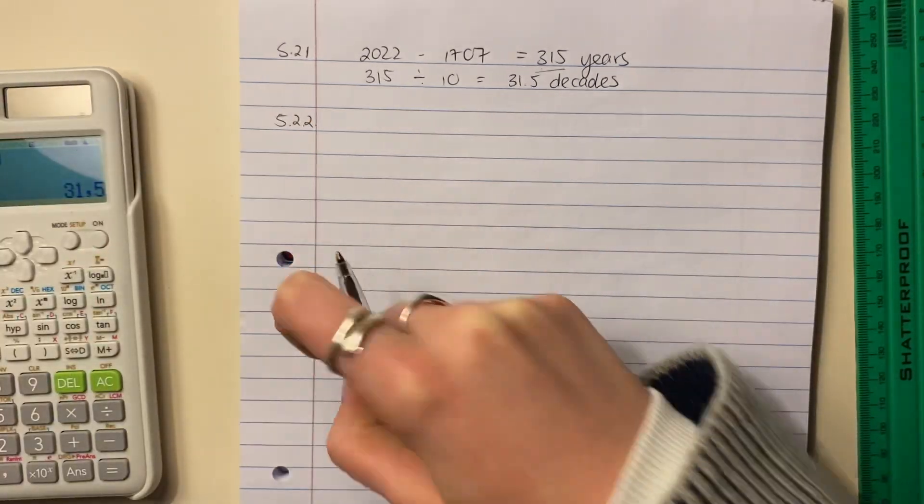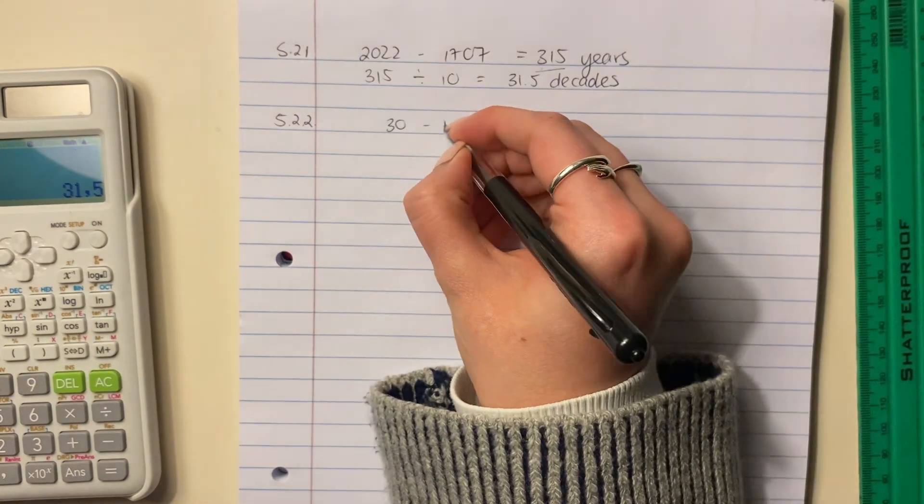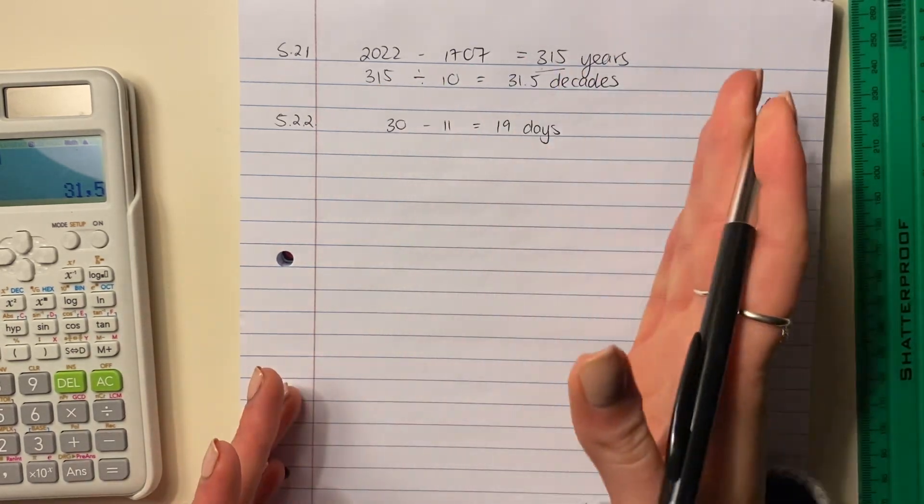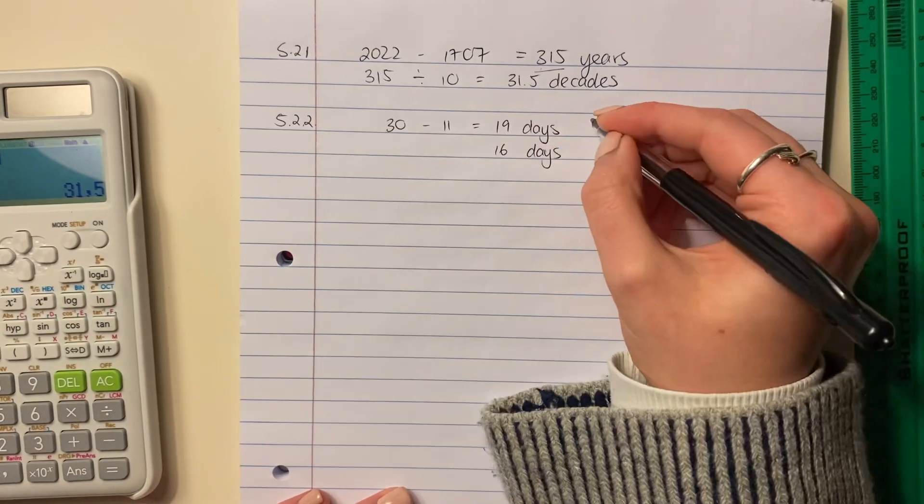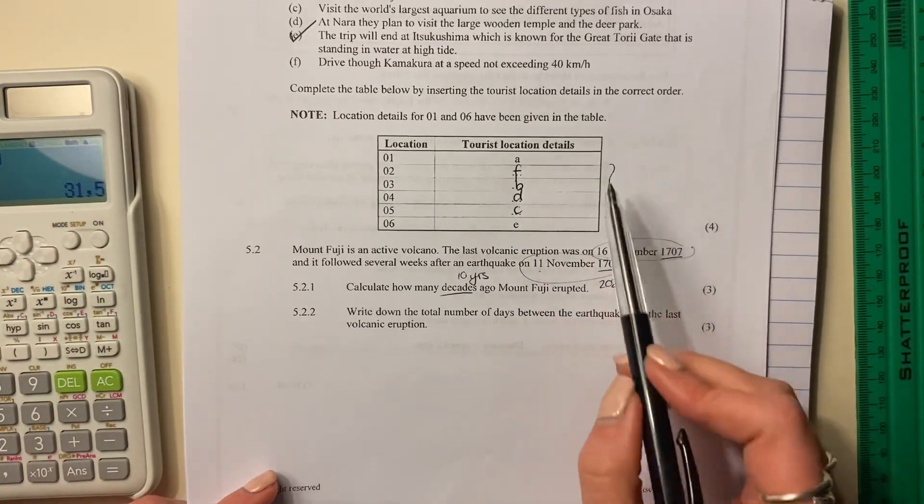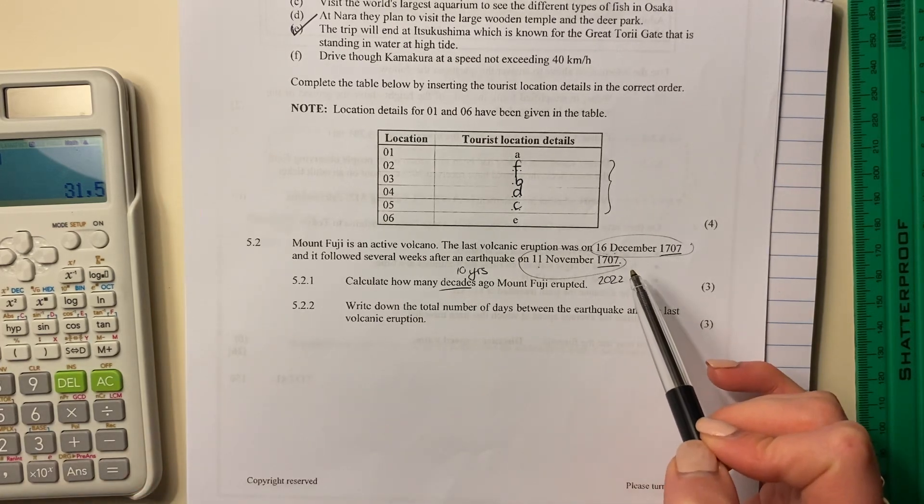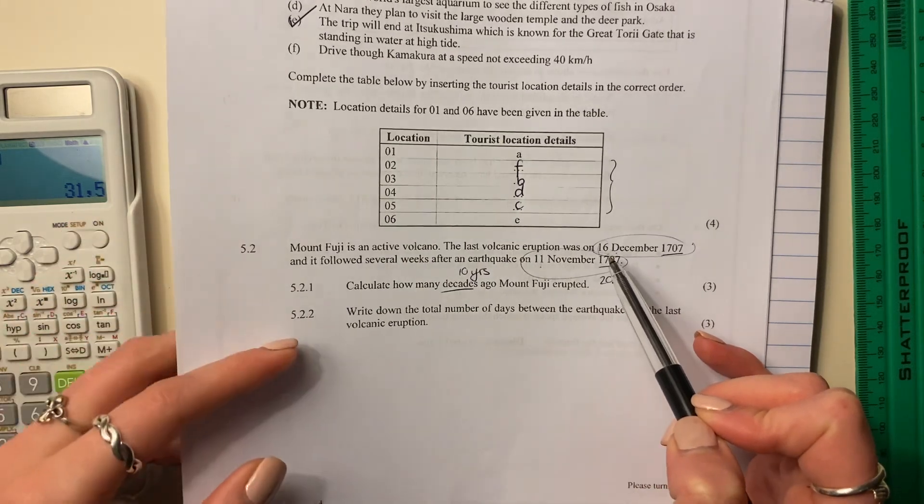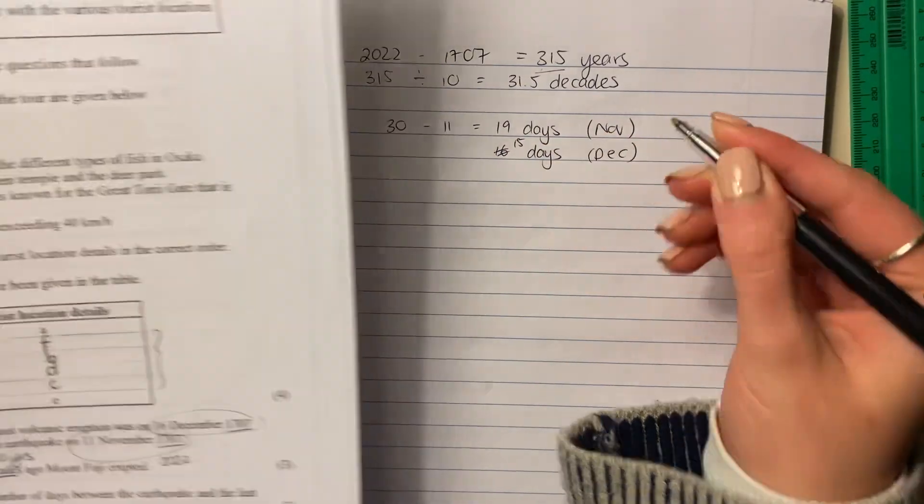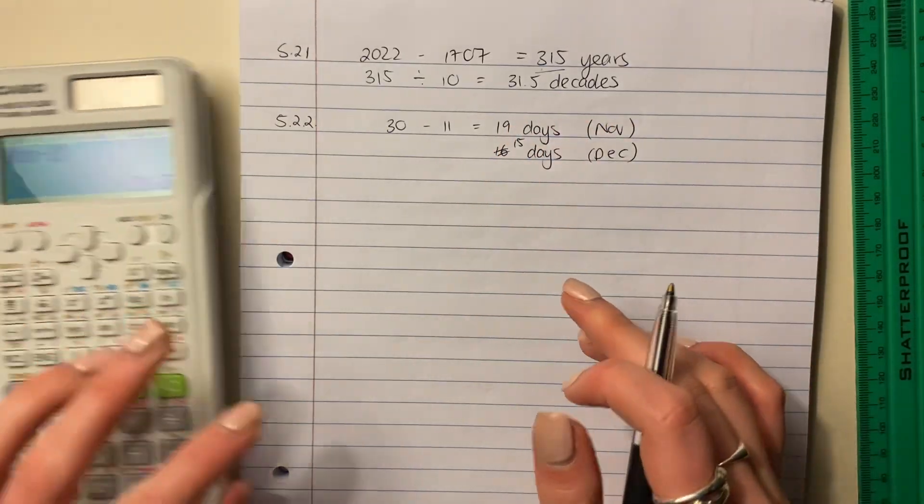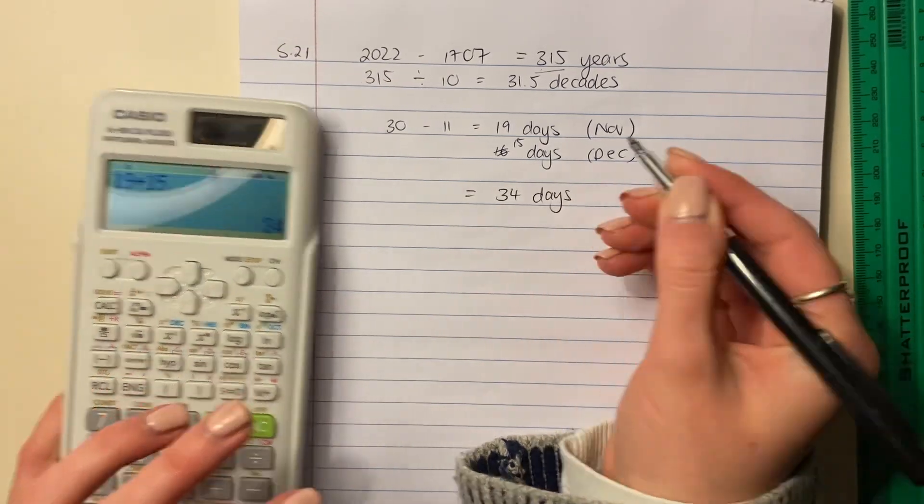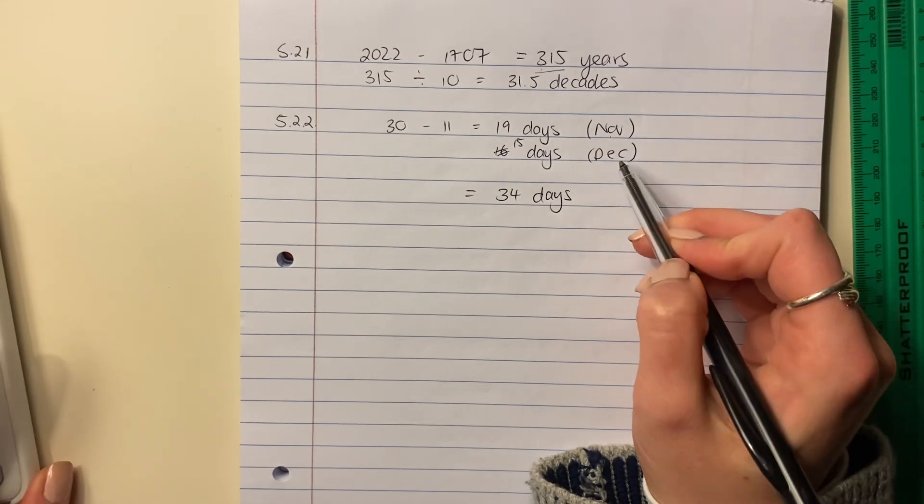So November has 30 days. So we're going to say 30 days in November minus the 11th, minus 11 days. So there were 19 days from the 11th of November until the end of November. And then there were 16 days, right? So that's November. Then there were obviously 16 days, right? There were 16 days in December. Now, I'm saying 16, but actually you shouldn't include the day that it actually happened. It should be the days in between because it did say the days between. So actually, this should be 15 days in December that we're accounting for, okay? So 19 in November, 15 in December. Add them together. And your answer is 34 days between the earthquake in November and the volcano in December.